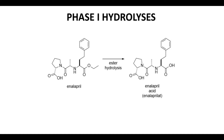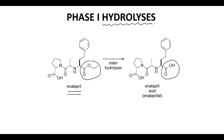Phase 1 reactions include oxidations, reductions, and hydrolysis, or hydrolytic reactions. One example shown here is enalapril. Enalapril contains an ester, and esters can be hydrolyzed in the body to form acids. There are many enzymes that perform these reactions — there are esterases found in the plasma, and lipases that break down fats, which are esters. So hydrolysis of esters or amides is a common type of reaction to see in the body.